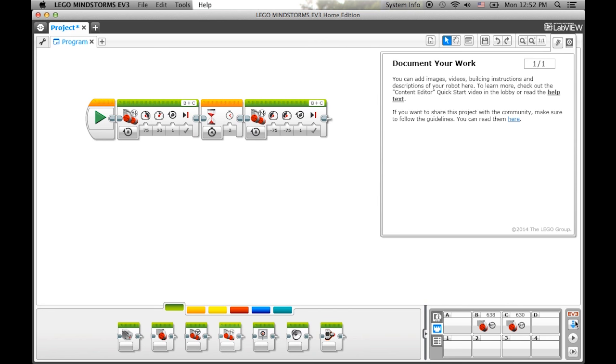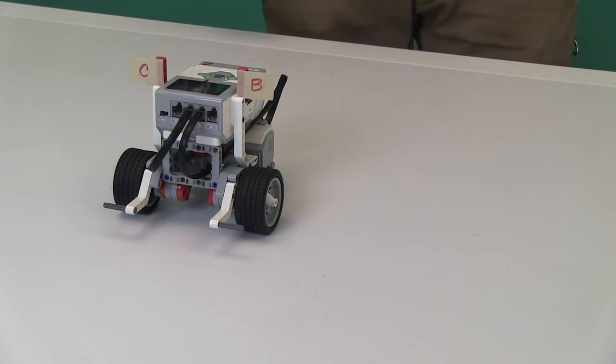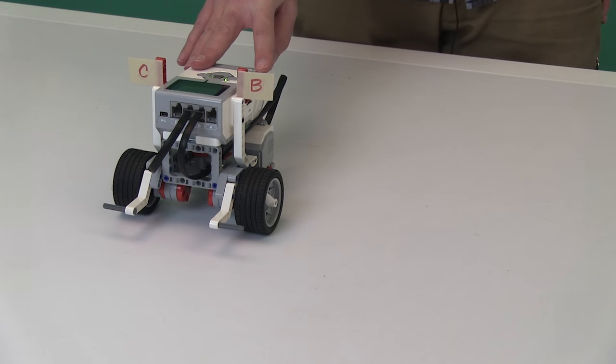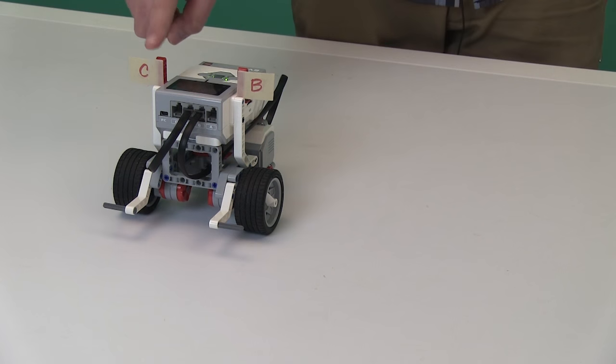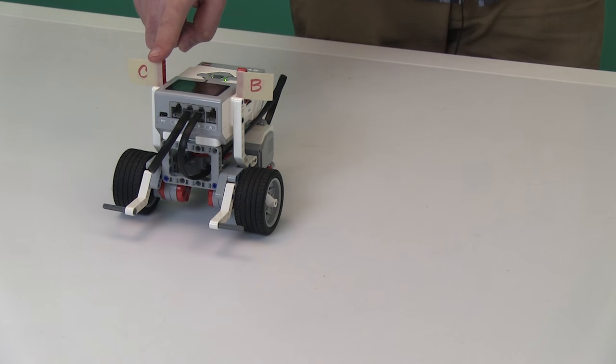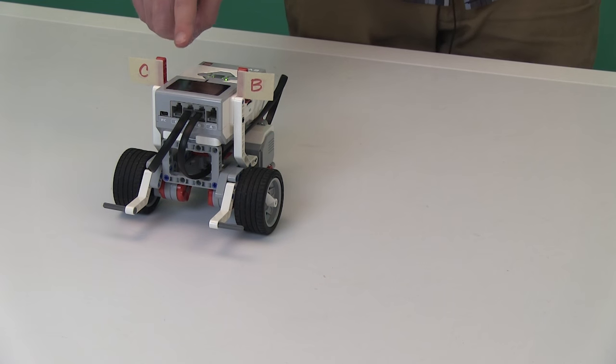Now just like before, we'll hit download and try running this to see what happens. So the program is now downloaded on this robot. Again, the first command has motor B running at a power of 75 and motor C running at a power of 30 for one rotation. After that, the robot's got to wait for two seconds and then drive backwards with both motors at powers of negative 75. So let's see what that looks like.